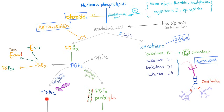Thrombin activates phospholipase A2 — we need thrombosis through thrombin. Bradykinin activates it too, since bradykinin stimulates pain. Angiotensin 2 — in hypotension or sepsis, we need vasoconstriction. Epinephrine — the sympathetic fight-flight-fright mechanism. If you're bleeding to death, epinephrine is high, stimulating phospholipase A2. Arachidonic acid converts to prostaglandin G2, then H2, then thromboxane A2 via thromboxane synthase — causing vasoconstriction and platelet aggregation to form a thrombus and stop the bleeding.